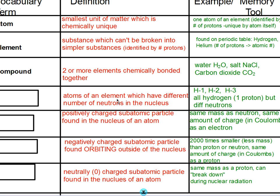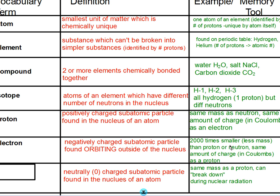Atoms of an element which have a different number of neutrons in the nucleus — that's an isotope. Remember, these were all hydrogens: this one had no neutrons, this one had one neutron, this one had two neutrons. A positively charged subatomic particle found in the nucleus is a proton, with the same mass as a neutron. A negatively charged subatomic particle found orbiting outside the nucleus is our electron — 2,000 times smaller. A neutrally charged subatomic particle found in the nucleus is a neutron.